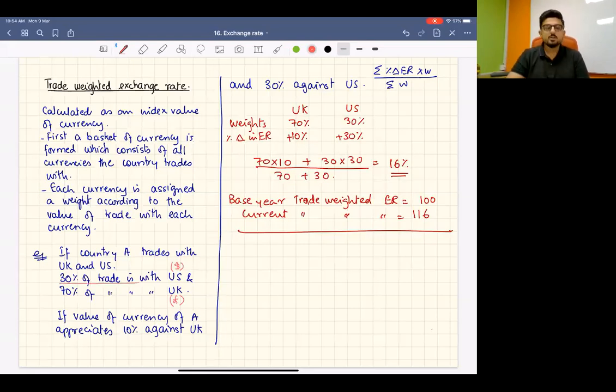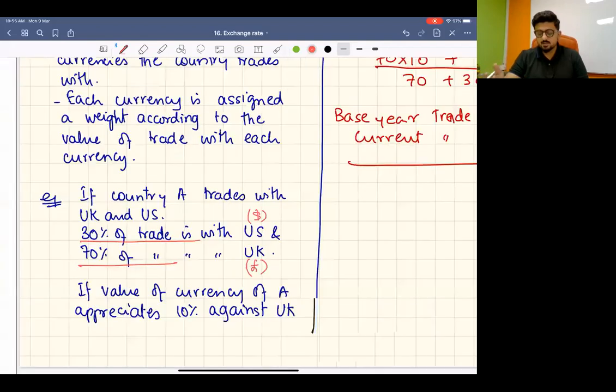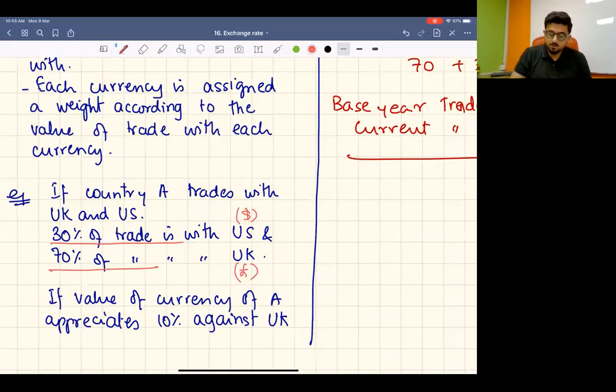and 70 percent trade with the UK. So 30 percent USA and 70 percent UK. Now, the currency's value - not against US only, not against UK only - the currency value is against all the countries it's trading with, as an index. That is based on the trade: 30 percent